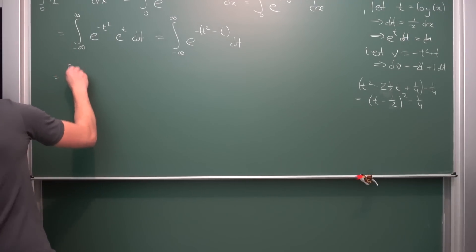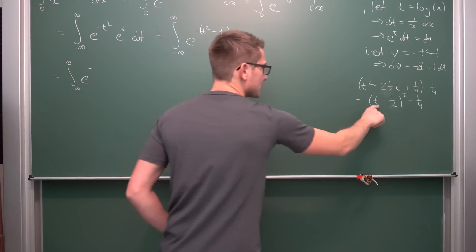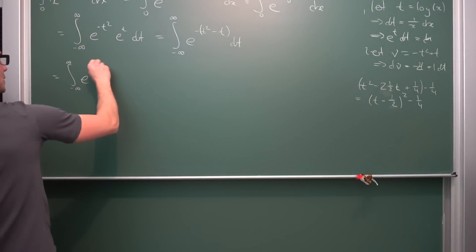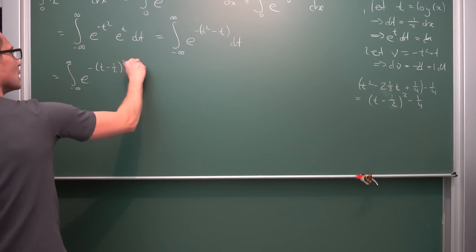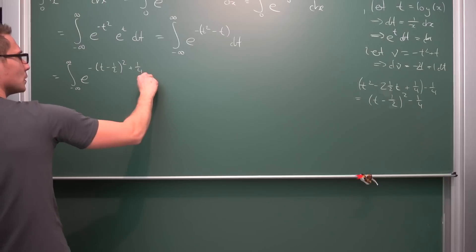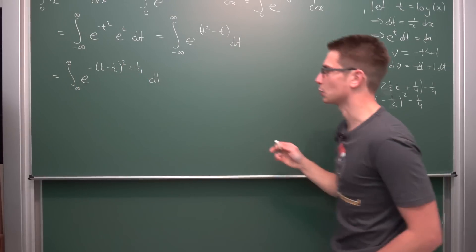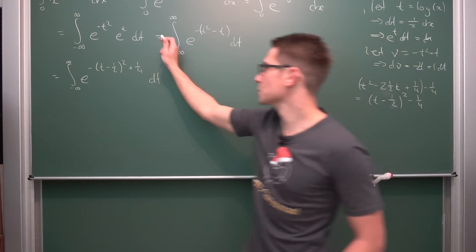If we plug this in here, we get the integral from negative infinity to infinity of e to the negative - we need to apply the negative to everything here - giving us in the process (t minus 1 half) squared, and negative and negative becomes positive, so plus a quarter, integrated with respect to t. This is way better. I can already see the solution here.